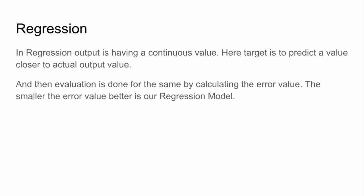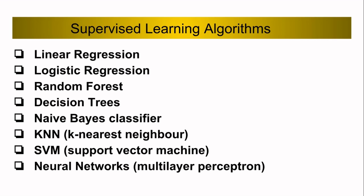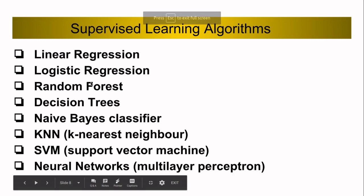There are several supervised learning algorithms: linear regression, logistic regression, random forest, decision tree, K-nearest neighbor, support vector machine, and neural networks. In neural networks, multi-layer perceptron networks will be covered in upcoming videos. Thank you.